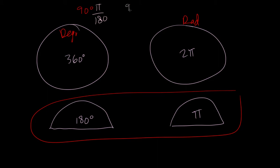And so if I multiply that out, I just get 90π over 180, and if I reduce that fraction, it reduces to π halves. And so π halves radians and 90 degrees are the same thing.